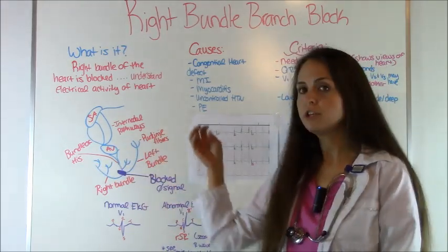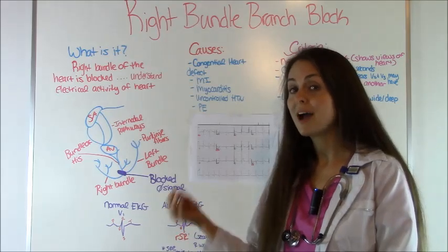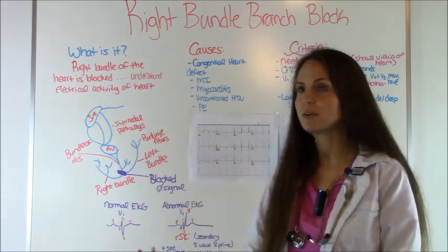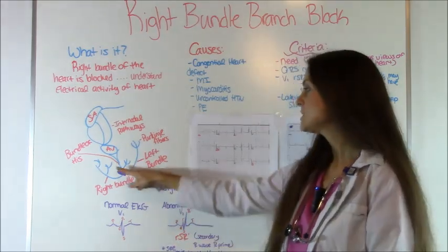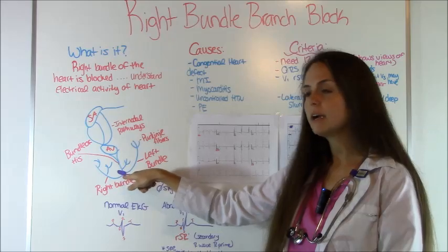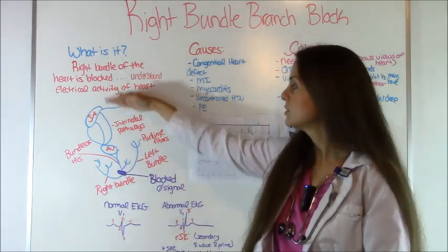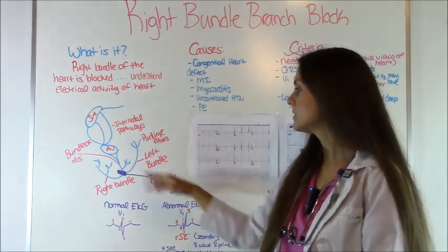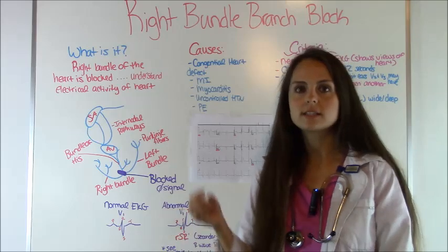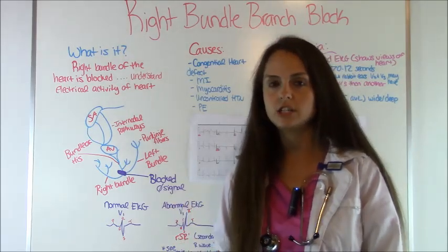Whenever you have a right bundle branch block, the right side is blocked — hence why it's called a right bundle branch block. So right here where you see this big purple area, no signal is going. Everything is just shooting down through here to the left side, and this causes some funky things on the EKG.